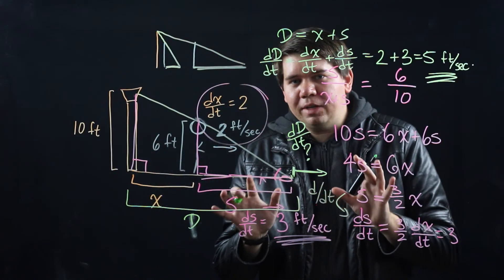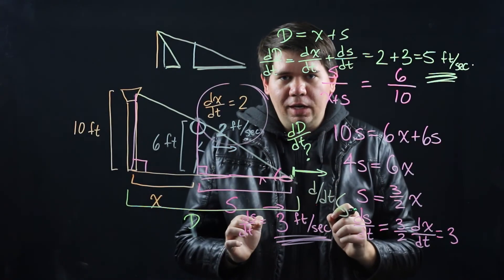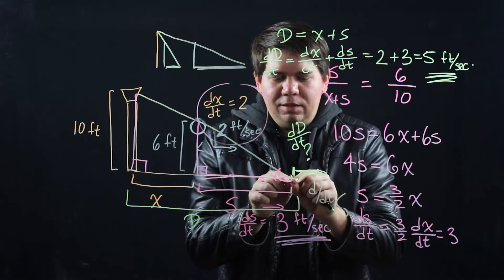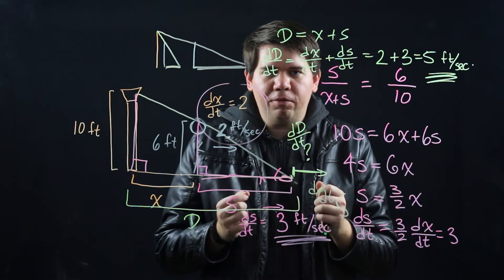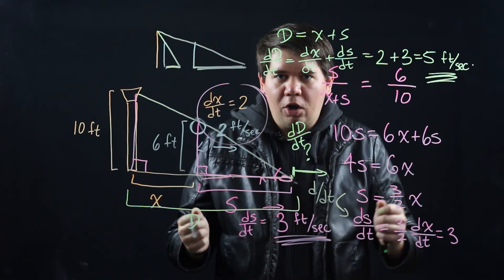So when you're looking at one of these related rates problems, make sure you're solving for the correct rate of change. Don't get confused between the length of the shadow and the distance from the shadow to the beginning of this lamppost. They're two different lengths, so be really careful to make sure what rate of change are we interested in solving for.